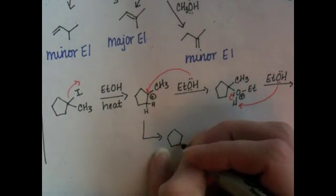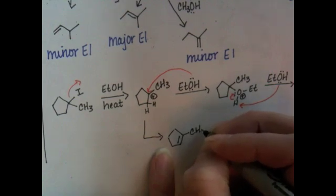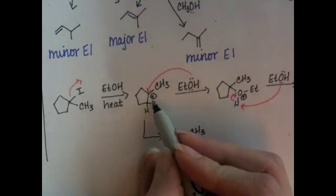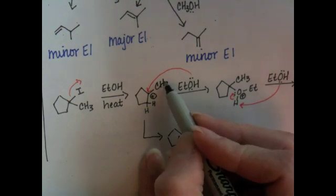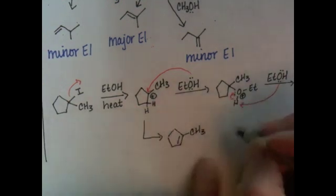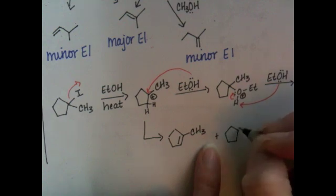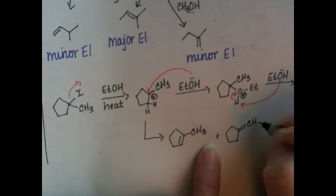we end up with this alkene. Again, from eliminating one of these guys. If we eliminate one of these hydrogens, we put the double bond right here. We get that product.